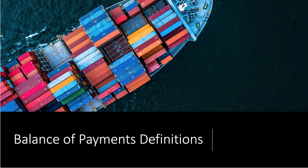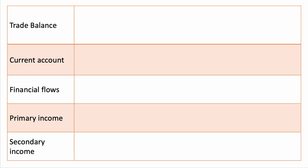Hi there and welcome to a video looking at five key definitions that form part of the balance of payments. This is quite a technical area of the economics course, so it's important to have your definitions in good shape. We'll look at five concepts: the trade balance, the current account, financial flows, primary income, and secondary income.